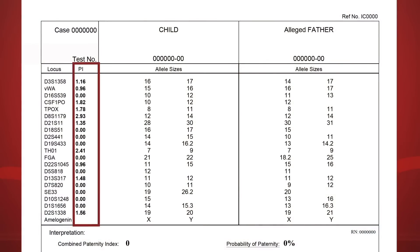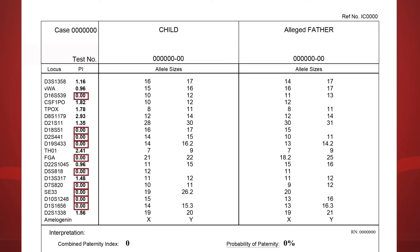PI stands for paternity index. The PI column on the genetic system table indicates the strength of the genetic match between possible father and child at that location. Each PI is determined using statistics — the higher the PI, the stronger the match. If there is a mismatch at a genetic location, the PI is most likely 0.0.